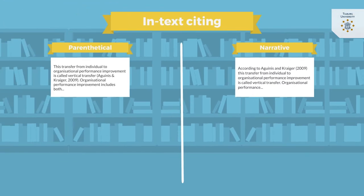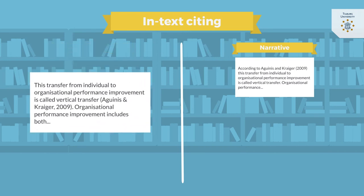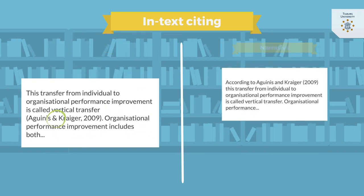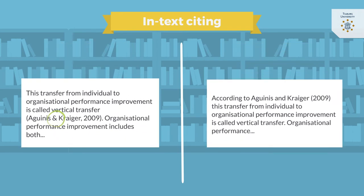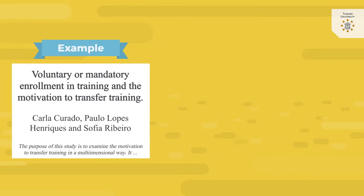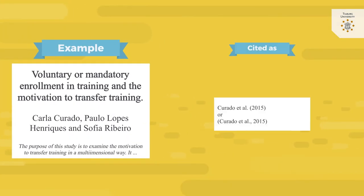Please also note that in case of two authors, the parenthetical citation uses the ampersand symbol and the narrative citation uses the word 'and'. If a source has three or more authors, you only mention the first author and add et al.